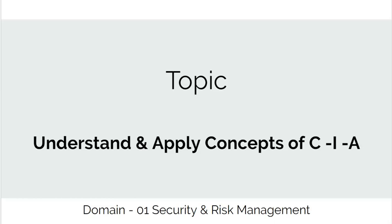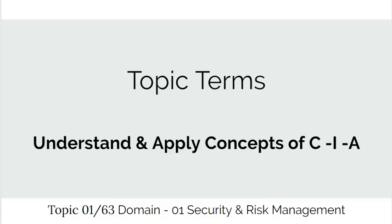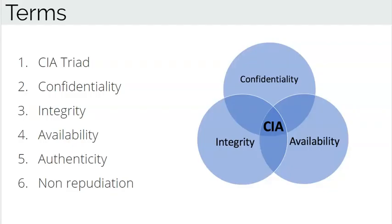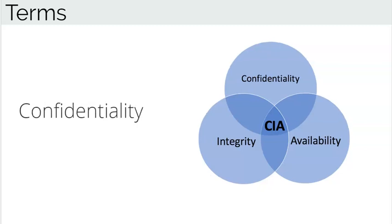In this video we will take an overview of the important terms to be covered in this topic — we will check their definitions later. There are six important terms. The first is the CIA Triad, which is an acronym for Confidentiality, Integrity, and Availability. The second term is Confidentiality, which means that sensitive information is not disclosed to unauthorized entities.